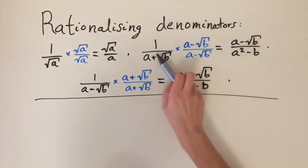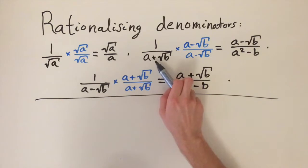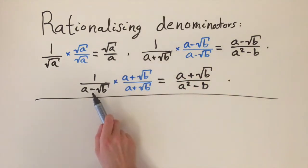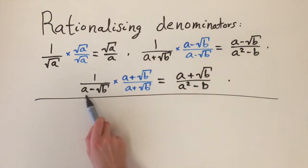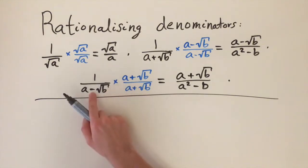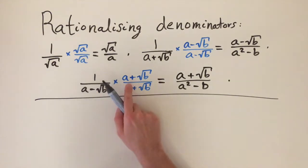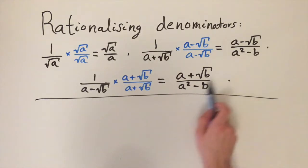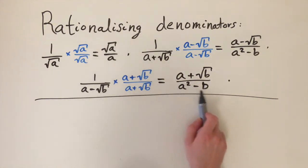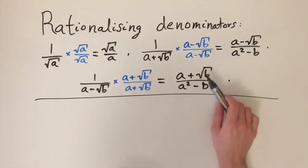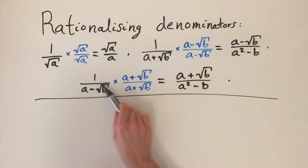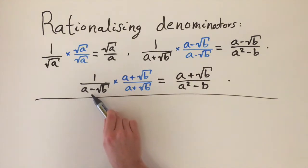Similarly, if we have a negative sign to start off with, we change the sign again — so negative goes to plus. Just as before, the new denominator is a squared minus b, and the numerator is the original number with the sign changed.